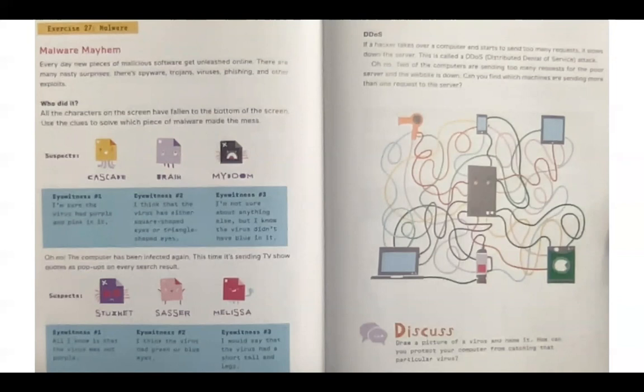Cascade is eyewitness one. Oh, sorry. The suspects are Cascade, Brain, and My Doom. Eyewitness one. I'm sure the virus had purple and pink in it. Eyewitness two. I think that the virus had either square-shaped eyes or triangle-shaped eyes. Eyewitness three. I'm not sure about anything else, but I know the virus didn't have blue in it.